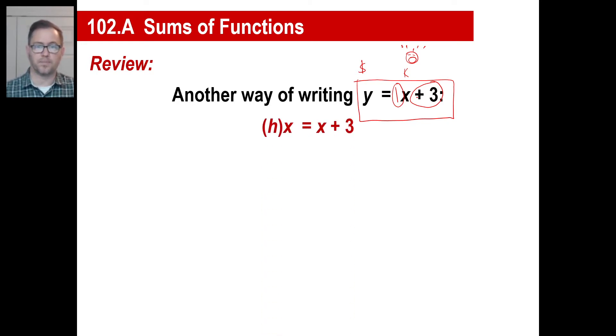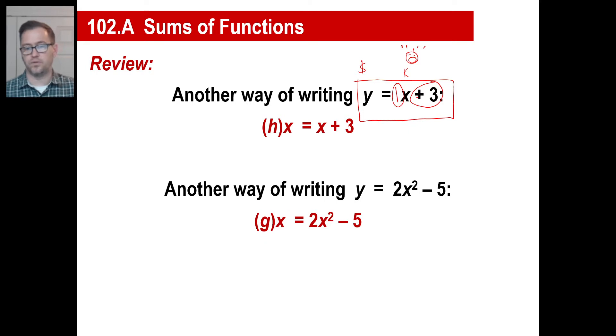Another way of writing this is, you could do f of x, of course, if you wanted to, or g of x, or whatever. Here's another one. y equals 2x squared minus five. That's another function. Of course, we know what that is now. Parabola. Well, what's this look like? If you write it another way, you could do something like this. g of x is 2x squared minus five. The reason we separate these by letters sometimes is because if you do y is this and y is that all the time, sometimes they can get mixed up or confused.